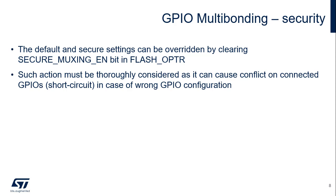The default setting, when the secure muxing enable bit is set to flash option register, is safe because the configuration in which two GPIOs bonded together with push-pull output configuration with different output levels cannot happen. However, for some applications it may be beneficial to multiply the maximum output current on the pin by using several GPIOs bonded together to boost the total output current. If the secure muxing enable bit is cleared in flash option register, the user can enable output on more GPIOs bonded together in the GPIOx_MODER register. The user software must ensure that there is no conflict between the GPIOs.